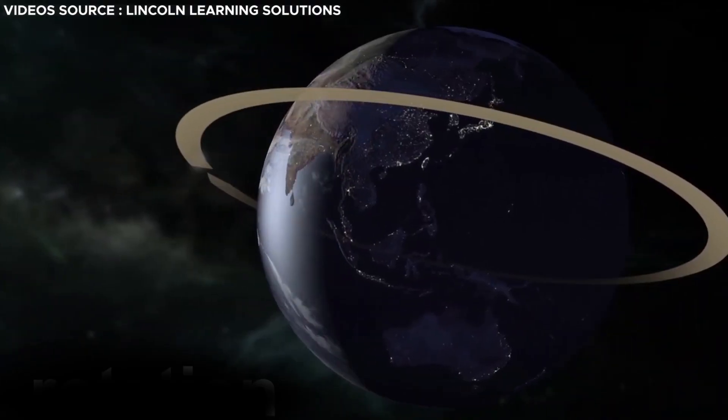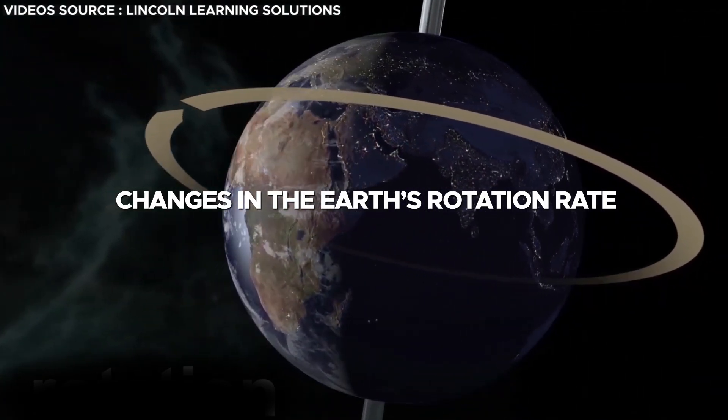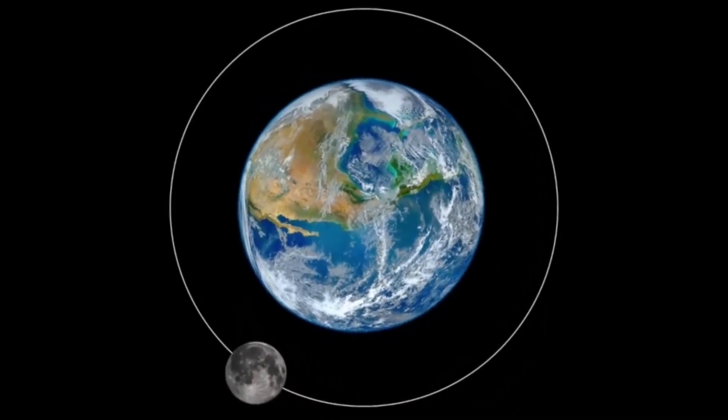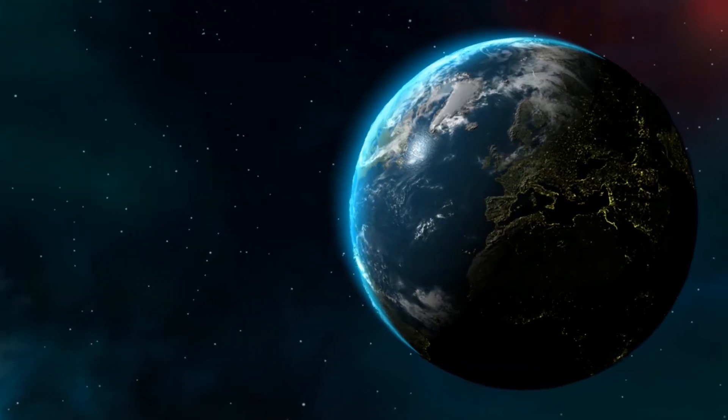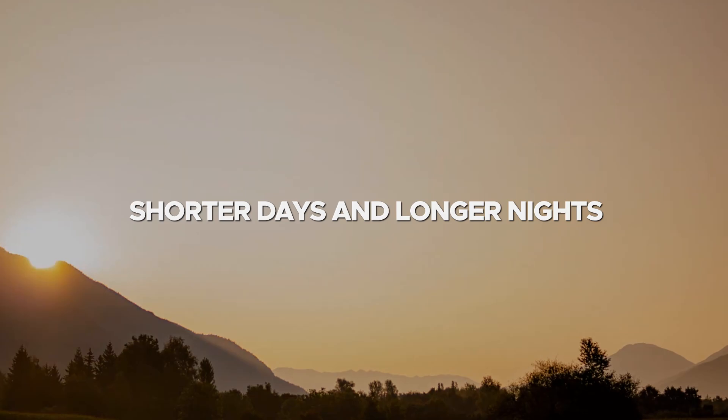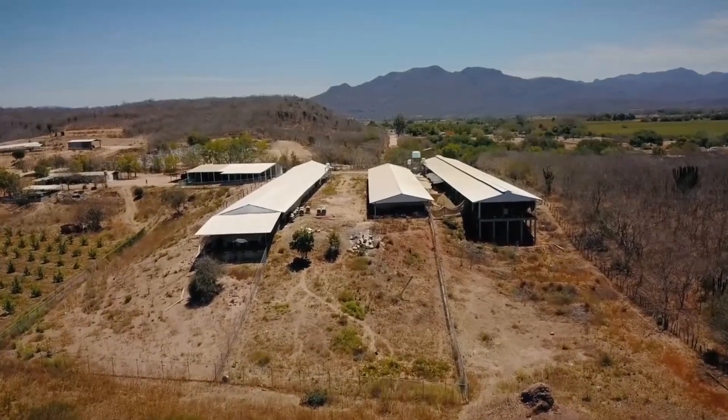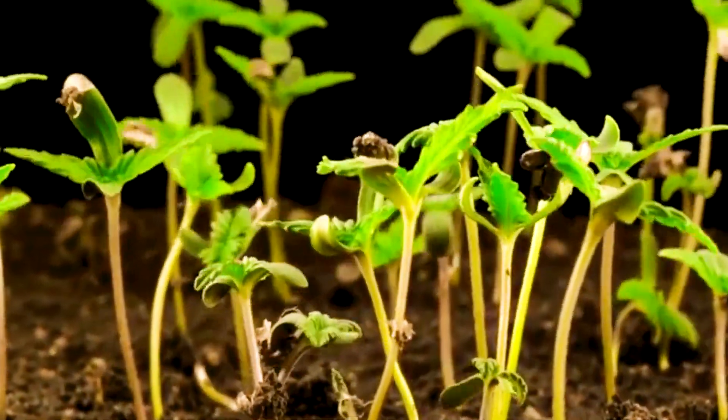Furthermore, the disappearance of the moon would trigger changes in the Earth's rotation rate. The gravitational influence exerted by the moon currently contributes to a deceleration of the Earth's rotation. In the moon's absence, the Earth's rotation rate could accelerate, resulting in shorter days and longer nights. Such changes could profoundly affect agriculture, as plant growth is intricately linked to the duration of sunlight exposure.